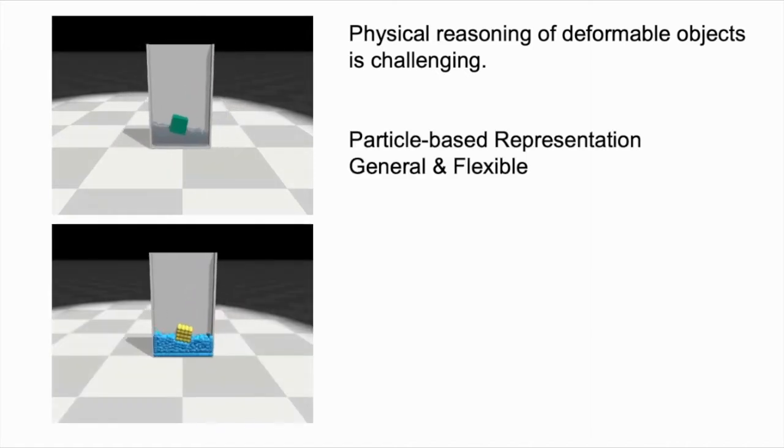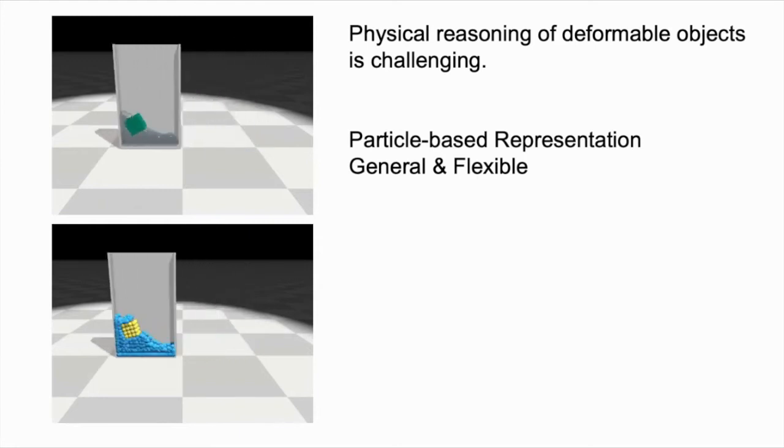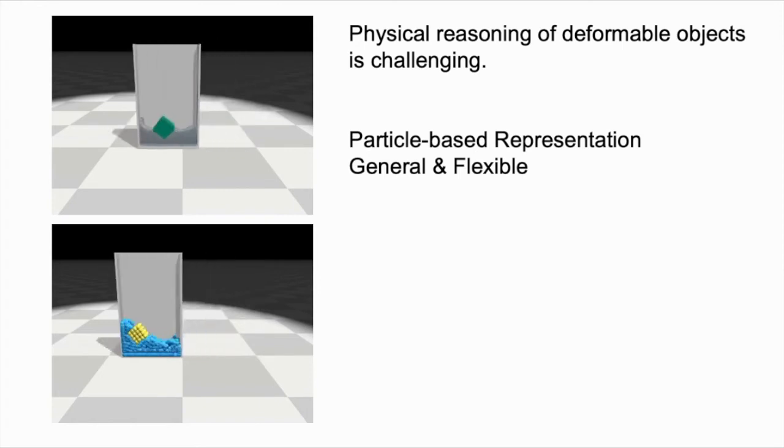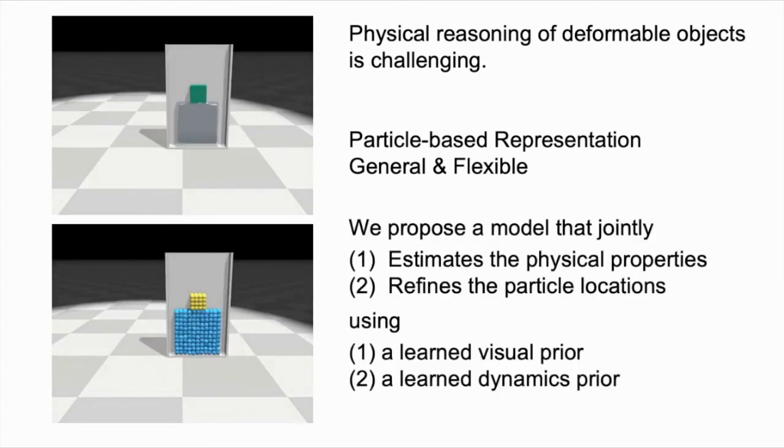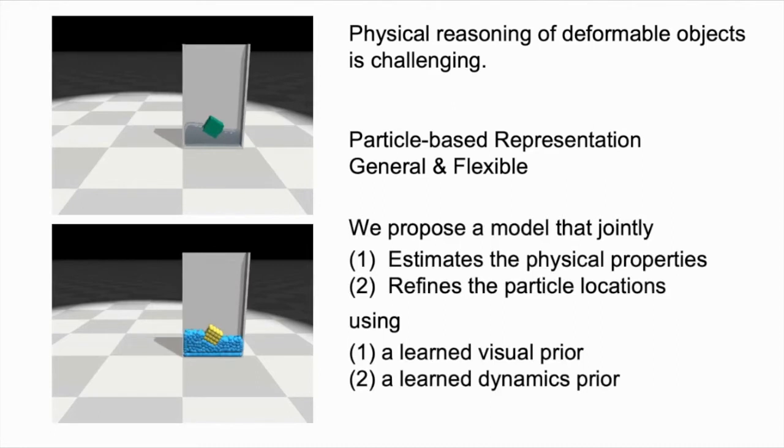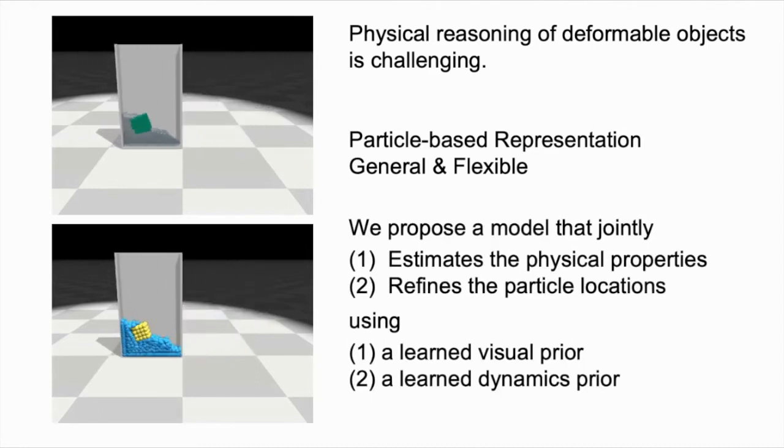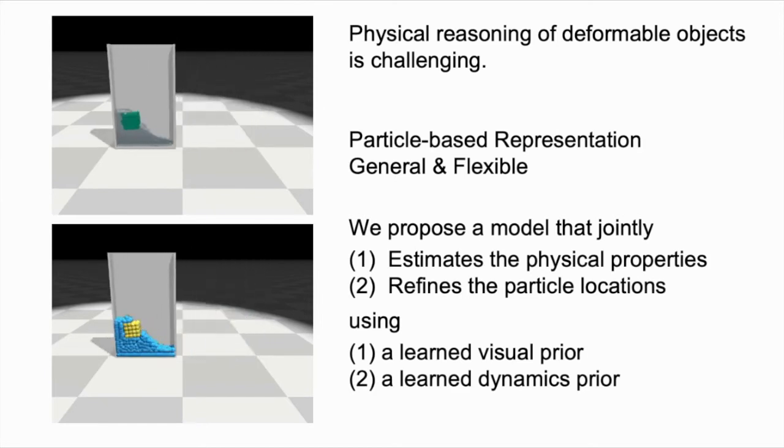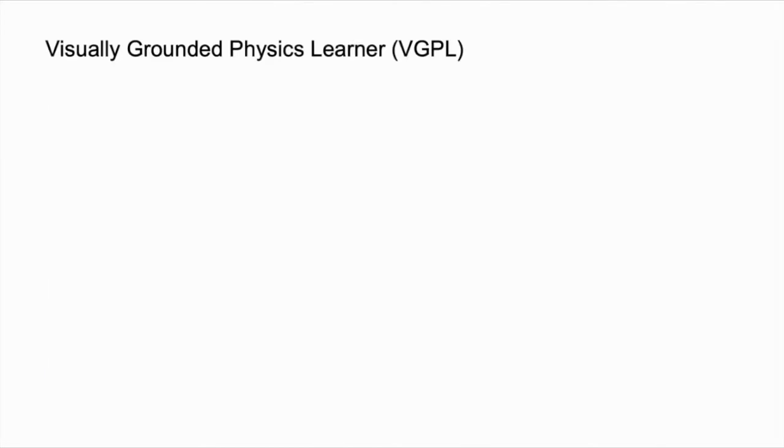In this work, we employ a particle-based intermediate representation for representing objects of different materials due to its generalization ability and flexibility. We propose a model that jointly estimates their physical properties and refines the particle locations using a learned visual prior and a dynamics prior. Our model, named Visually Grounded Physics Learner (VGPL), takes a sequence of image frames as inputs, reasons about the underlying physical properties, and makes future predictions.